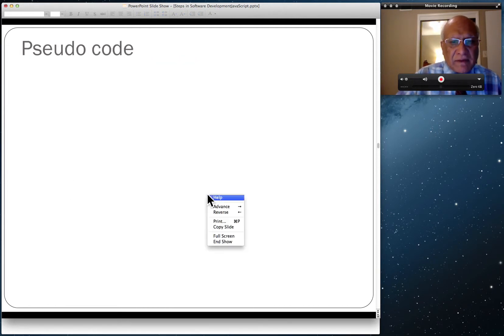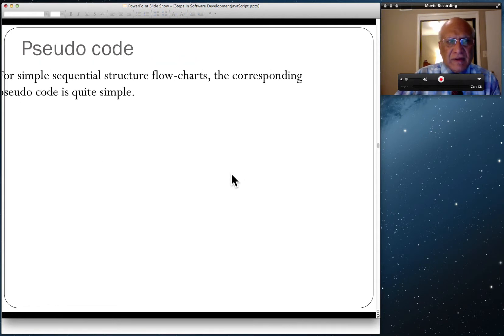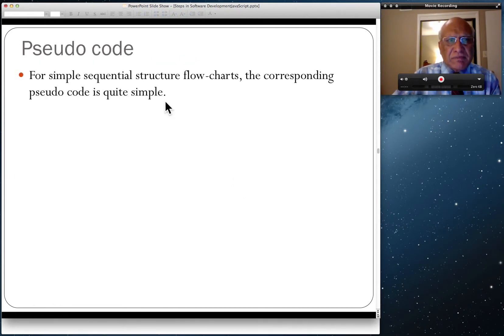How do we translate from flowchart to pseudocode? We use the flowchart shown earlier to do the pseudocode. For simple sequential structures, flowcharts and the corresponding pseudocode is very simple.